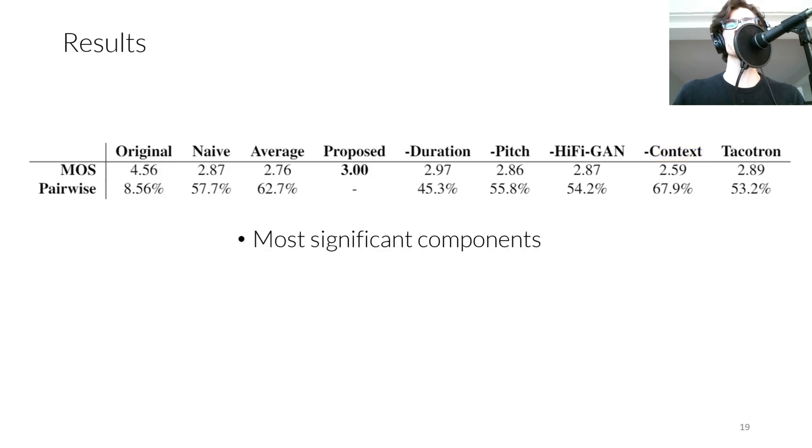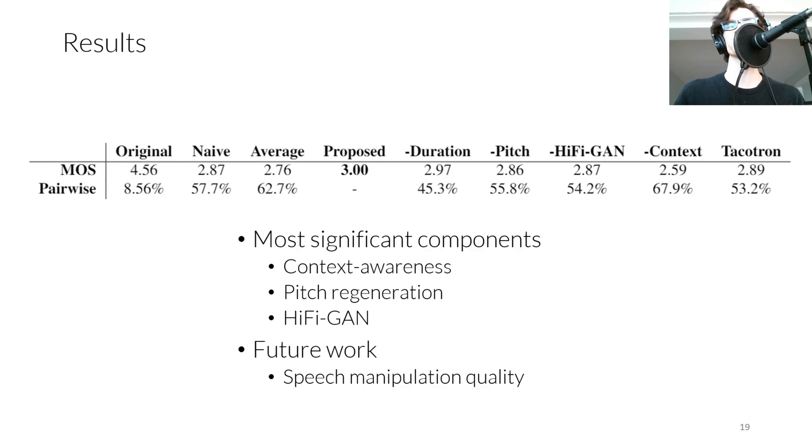We see that the components that contribute most to naturalness are context awareness, pitch correction, and using HiFiGAN to remove artifacts. In future work, we aim to improve the quality of the variable ratio of pitch shifting and time stretching of speech to close the MOS gap with original speech, as well as to investigate duration modeling for larger data distribution than single speakers with a consistent reading style.